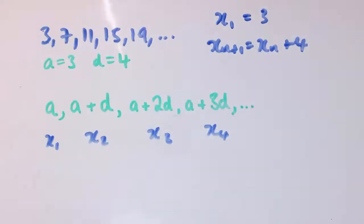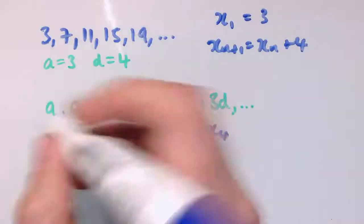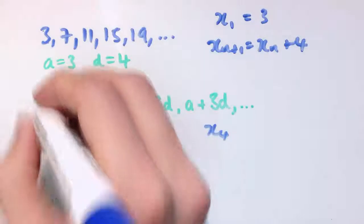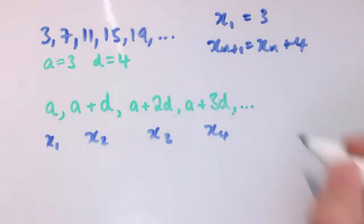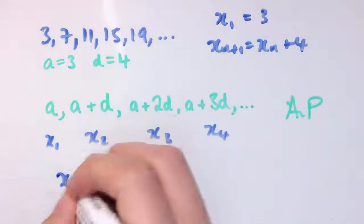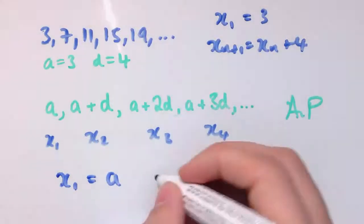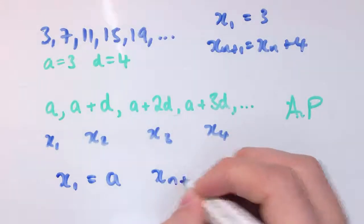So the general form for this sequence, for a general arithmetic progression, here's my general AP: it would say x₁ is always a, so a is just what we're calling the first term.